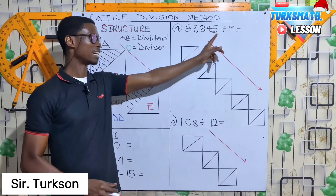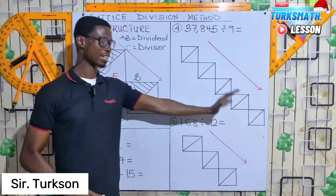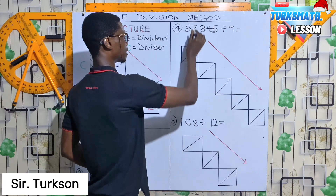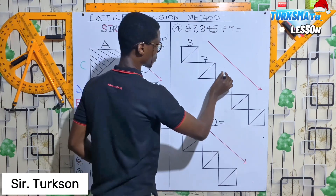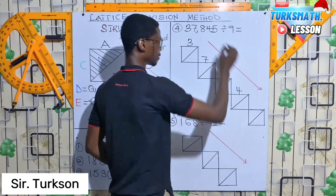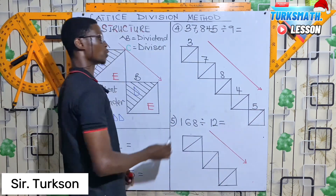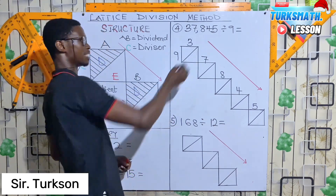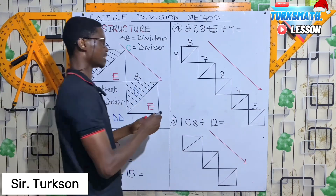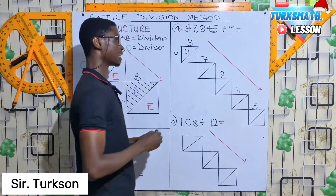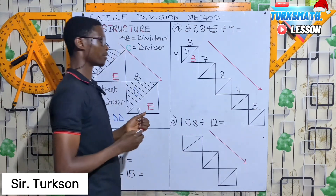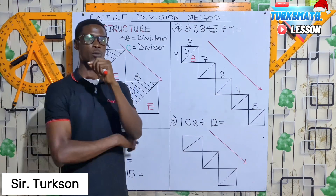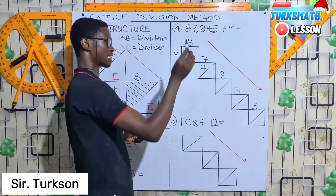Now let's look at Example 4: 37845 divided by 9. Draw your lattice, then label it: 3, 7, 8, 4, 5 with divisor 9. We need five lattice boxes because there are five digits. Now divide: 3 divided by 9 is 0, remainder 3. How many 9s do we have in 37? That is 4, because 9 times 4 equals 36, leaving remainder 1.